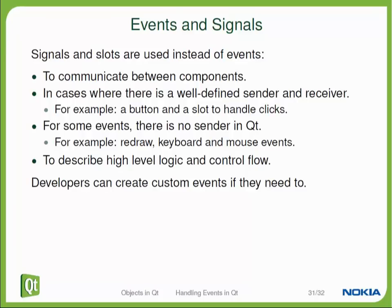That's also why in many Qt applications, events are actually translated to signals. For example, a mouse click on a button is usually translated to a triggered signal of that button. The signal represents a higher meaning than the initial click — the click is something physical that happened, while the fact that the button was triggered has a semantic meaning to the program. This is how we differentiate between signals/slots and events.